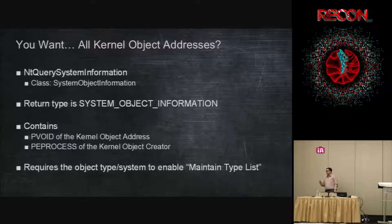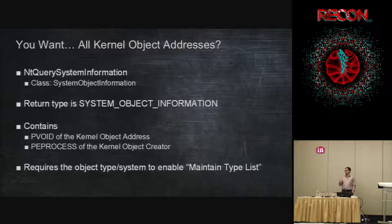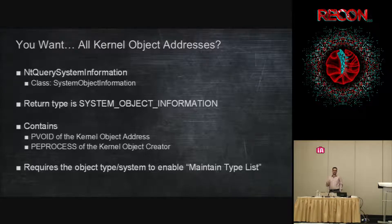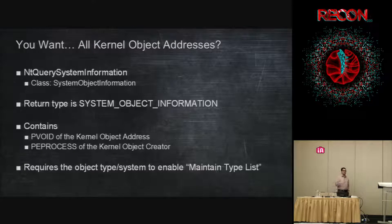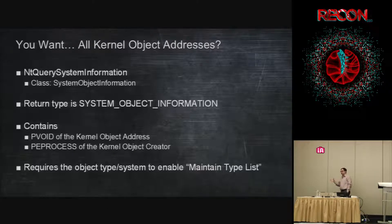However there's one saving grace: the object has to have requested this information to be kept — that's called the maintain type list. Unless you boot in debug mode or with a special debug flag, you won't get any information except from objects that turn this on. The object type object does turn it on, so you can dump all the object types and their pointers, but you won't get all the events, mutexes, etc. without that flag. So it still leaks all the object types, but doesn't leak everything.